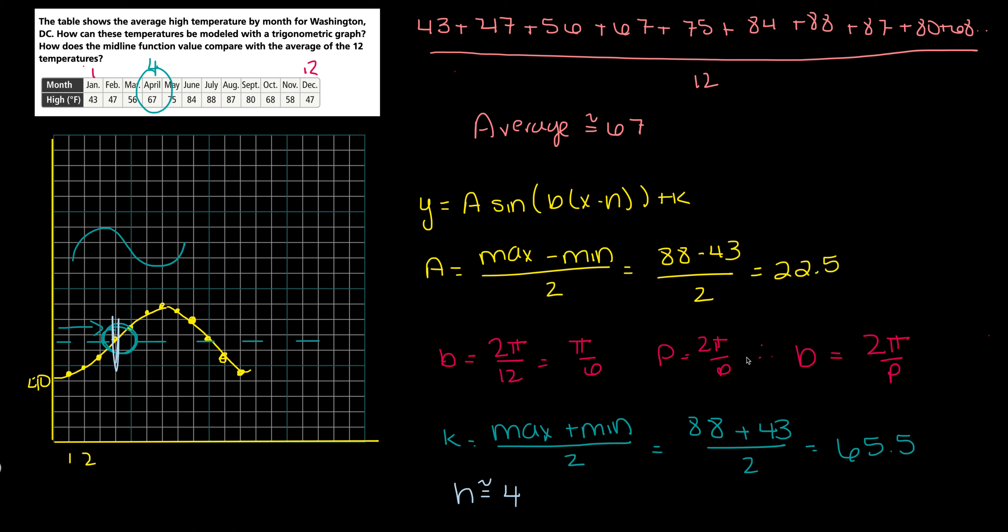Now let's put all these pieces together and write the function. So my function is going to equal the amplitude 22.5 times sine of my B, which is π over 6, times x minus 4, plus 65.5. My midline being 65.5, my average being about 67. You can see that the midline is pretty close to the average value.